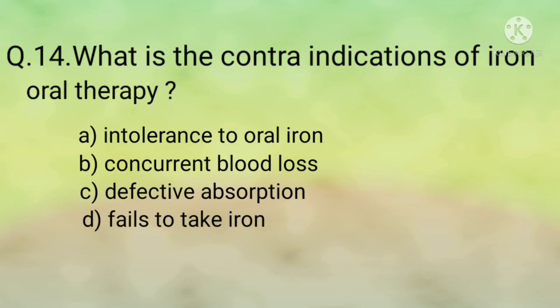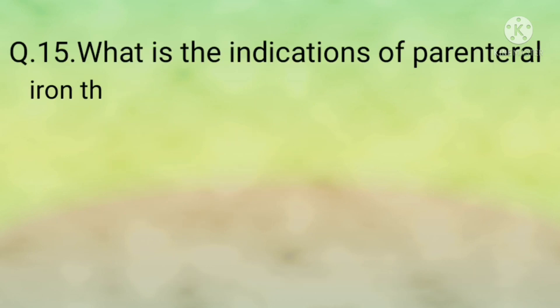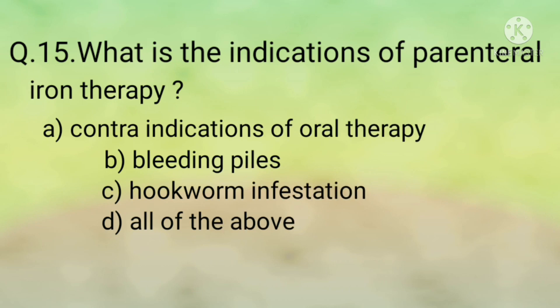Question number fourteen: What is the contraindication for oral iron therapy? Options are: option A, intolerance to oral iron; option B, concurrent blood loss; option C, defective absorption; option D, fails to take iron. The correct option is option A, intolerance to oral iron.